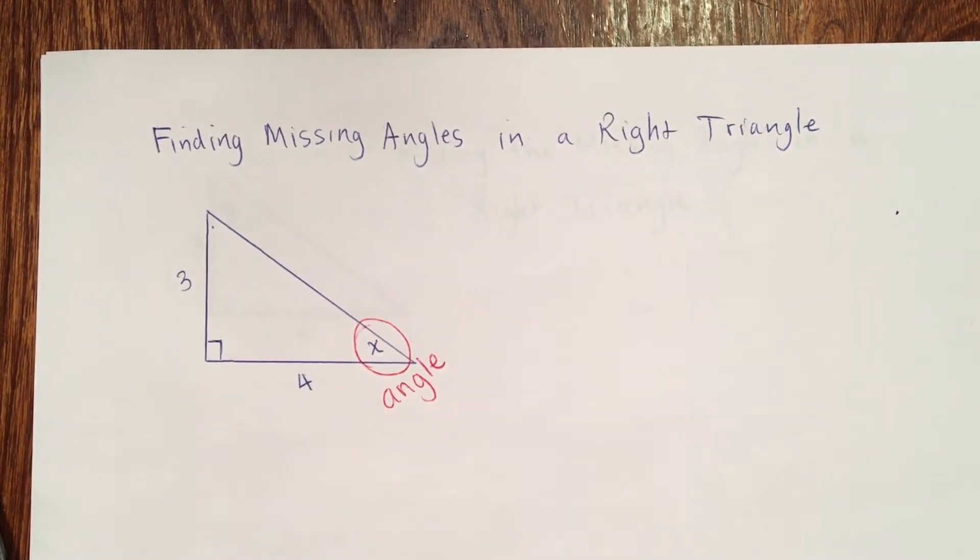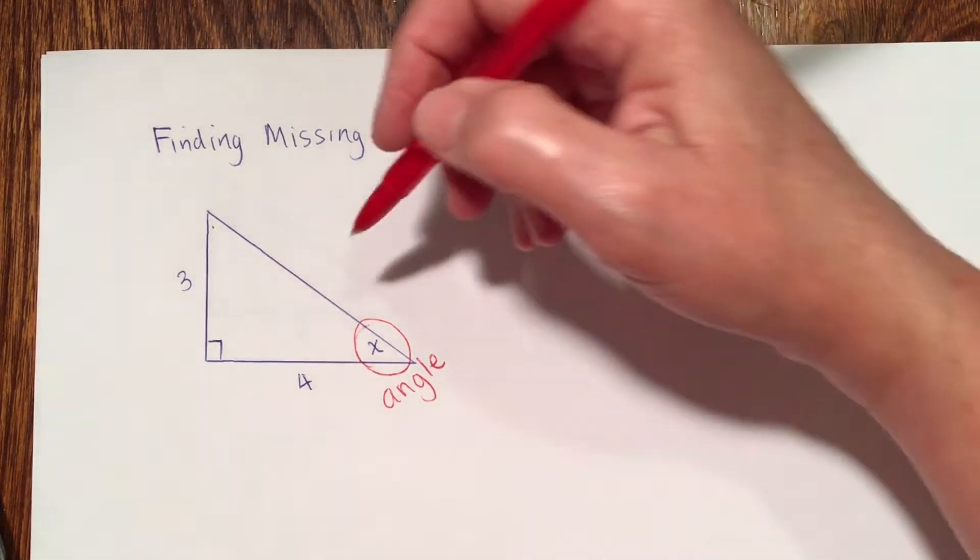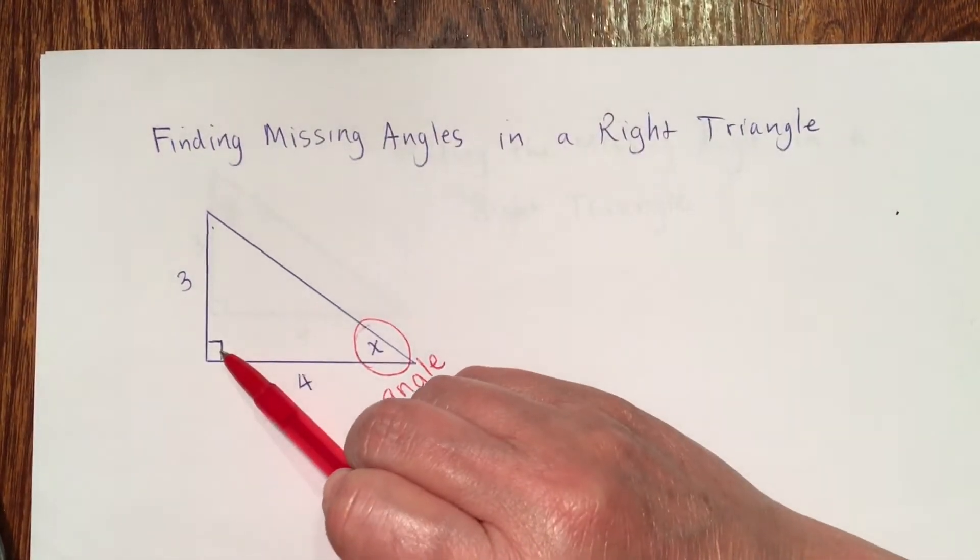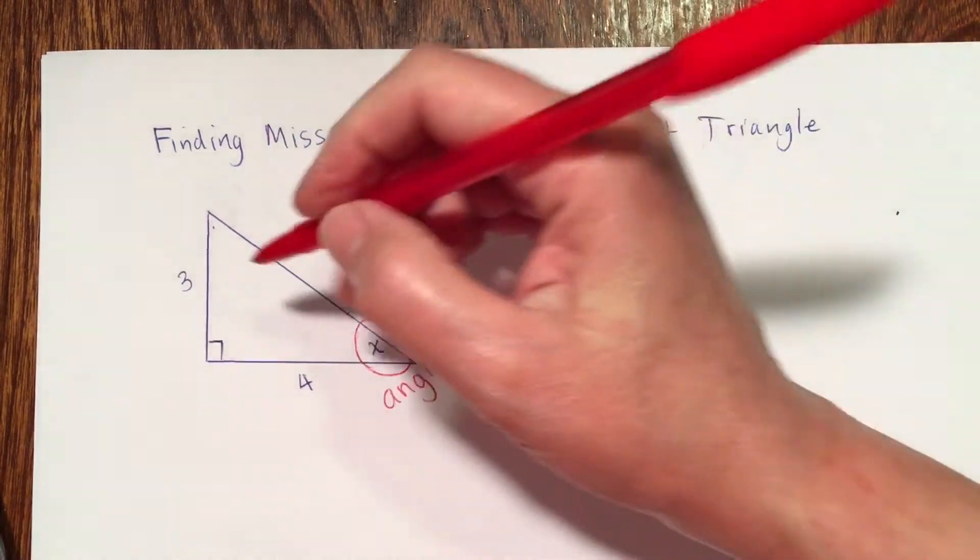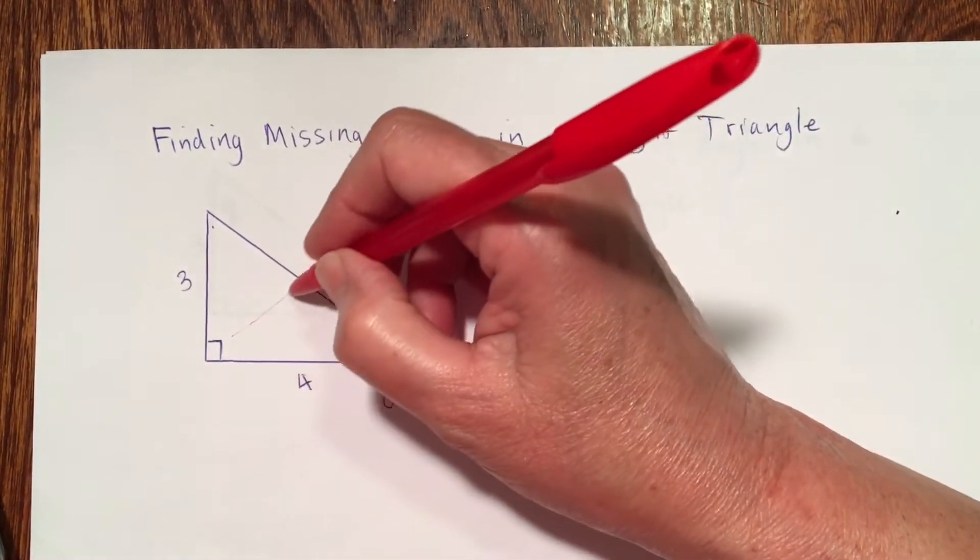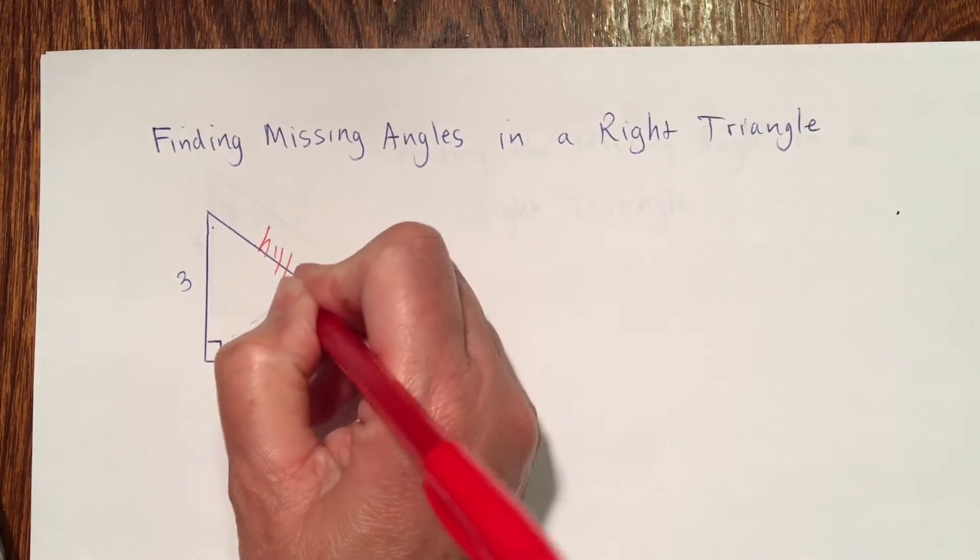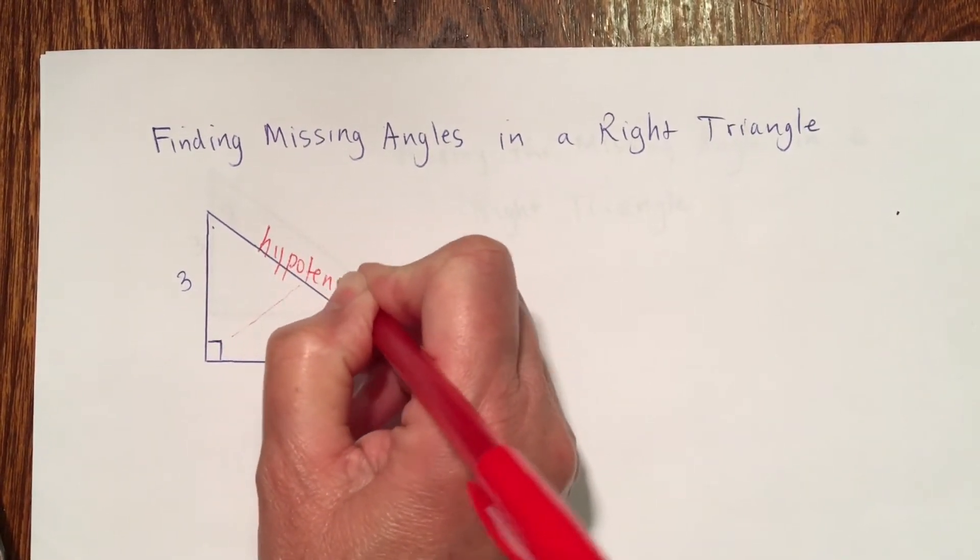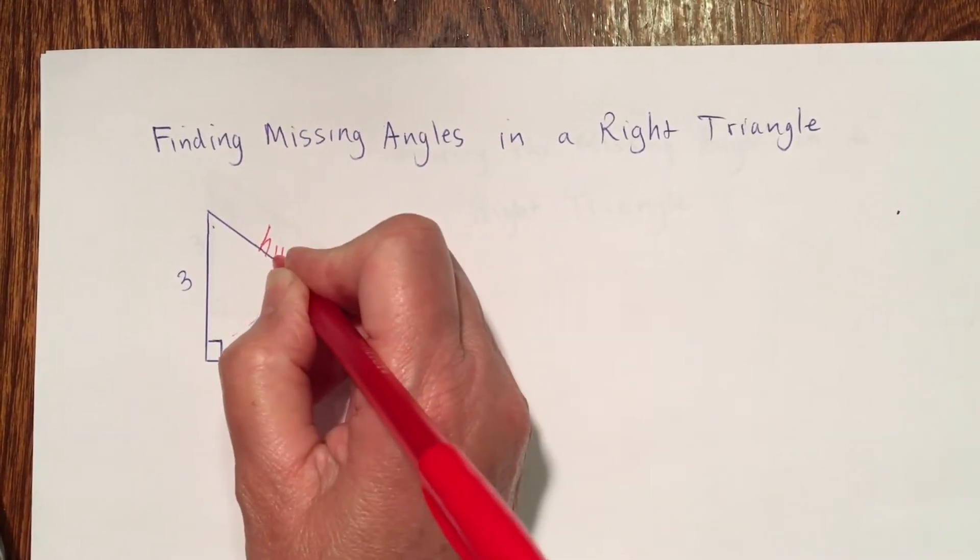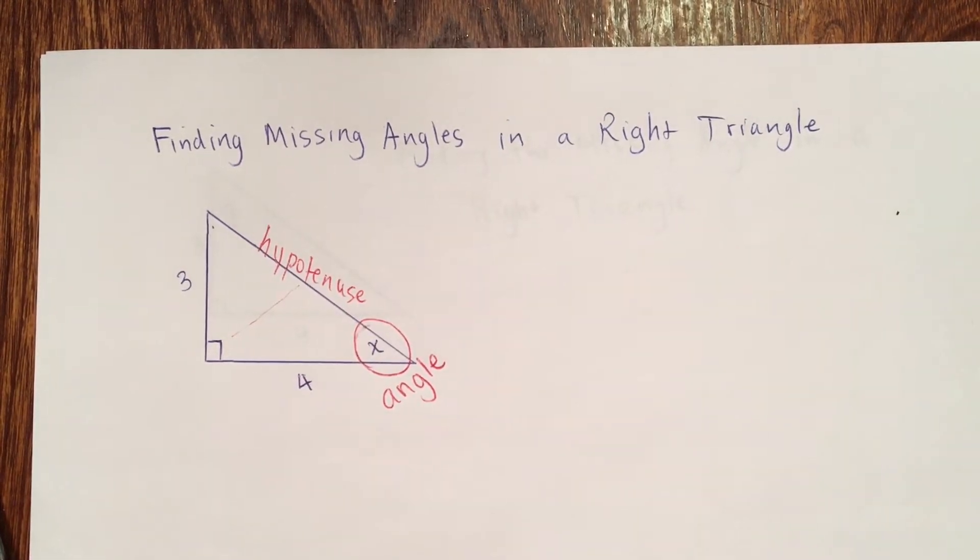I'm looking at the triangle and I see that I have, well the right angle is where the square is. Opposite from the right angle, this longer side is the hypotenuse. They did not give me the measure of the hypotenuse. So I'm not going to worry about that guy there.